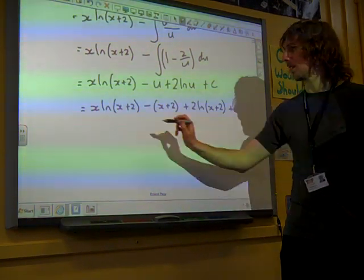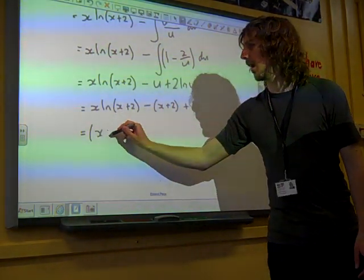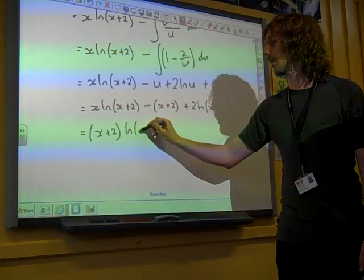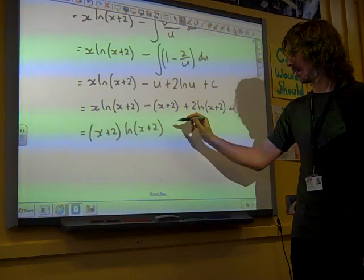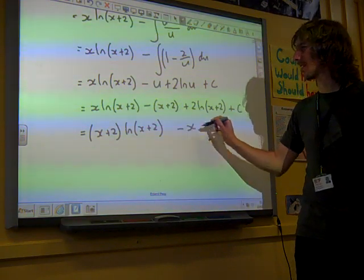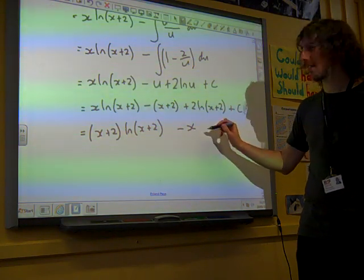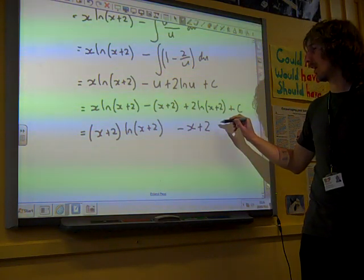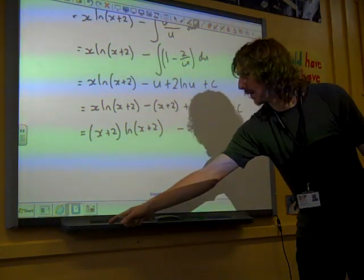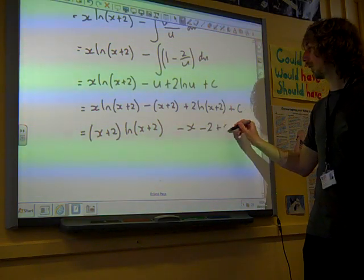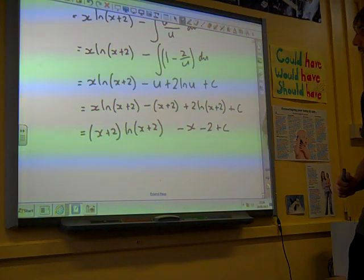I think I might have then factorized this as (x+2) times the natural log of (x+2). And then, I might have wanted to write this as being minus x. It doesn't really matter whether we write this as a plus two, or even a minus two. Because all of that, the minus two plus C is just another constant, isn't it?